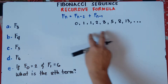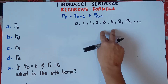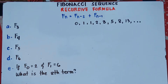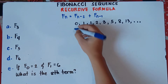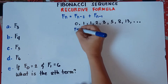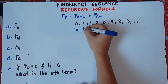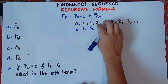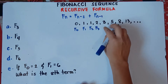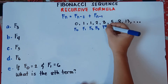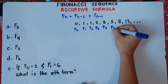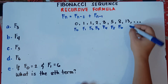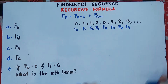Now this will be the pattern, and we will be referring to it with regards to our formula. Your 0 here will be F sub 0. Your 1 will be F sub 1. Your 1 again will be F sub 2. This 2 will be F sub 3. This 3 will be F sub 4. This 5 will be F sub 5. 8 will be F sub 6. And 13 will be F sub 7, and so on.